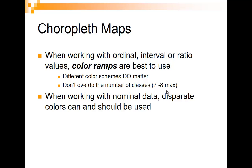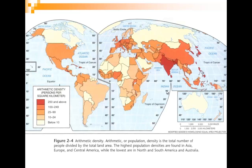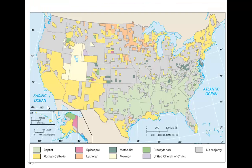When we work with nominal data, we use disparate colors — greens, orange, purples — showing states, something that's not compared. Here's an example: arithmetic population density, number of people per square kilometer. You can see darker means higher, lighter means lower, going from yellow up to a darker orange.